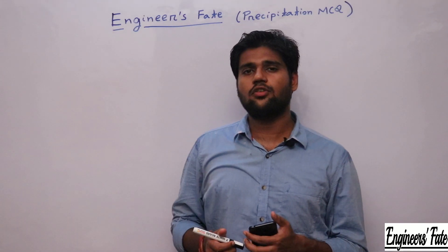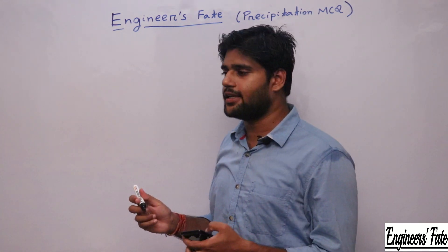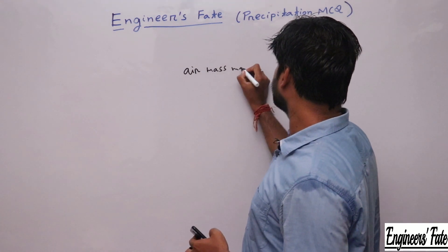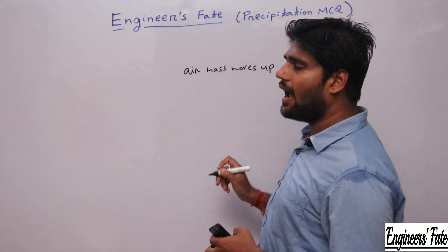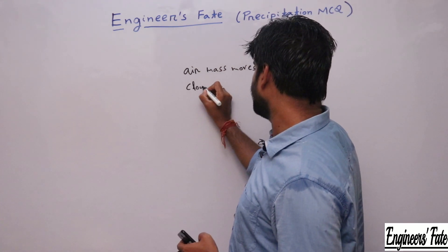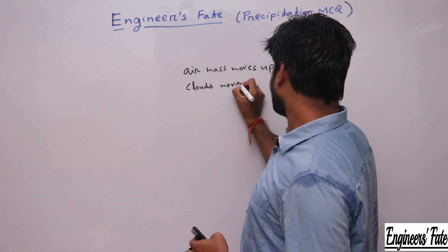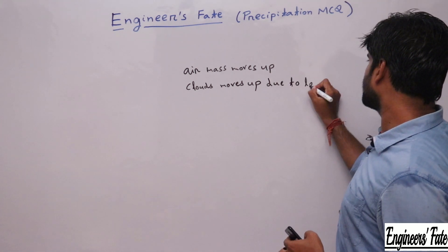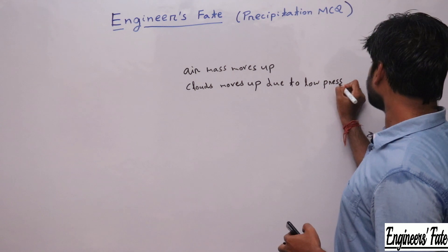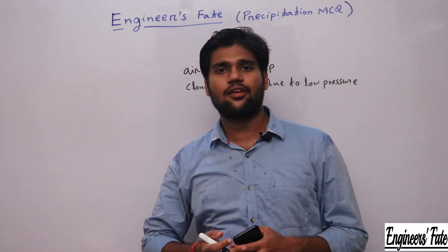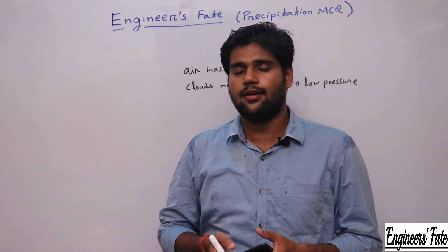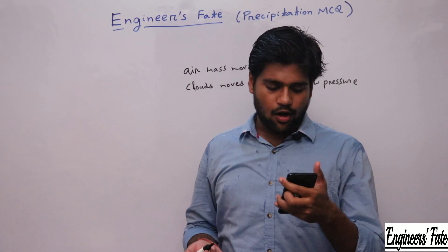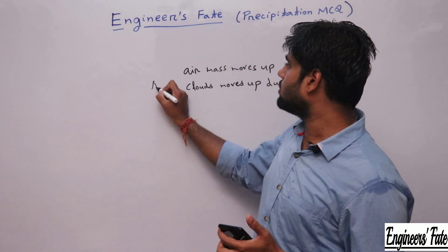The question is about cyclonic precipitation. In cyclonic precipitation, the air mass moves up and the clouds present move up due to low pressure. I have discussed cyclonic precipitation in detail in my precipitation quick revision video. Cyclonic precipitation is caused by lifting of an air mass due to pressure difference. So the answer will be option A.